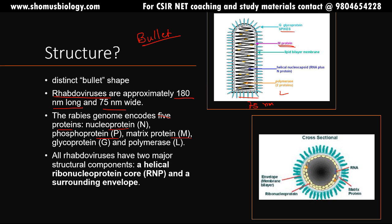All rhabdoviruses have two major structural components. One is the helical ribonucleoprotein core, or RNP. The genome has a zigzag helical structure — it is a helical ribonucleoprotein core containing not only RNA but also proteins, including the polymerase, which is the L protein. A surrounding envelope is also present, containing G glycoprotein spikes. In cross-section, there is a matrix protein surrounding the structure, a hollow chamber where the nucleocapsid and nucleoproteins are present, with the envelope and G glycoproteins on the outside.